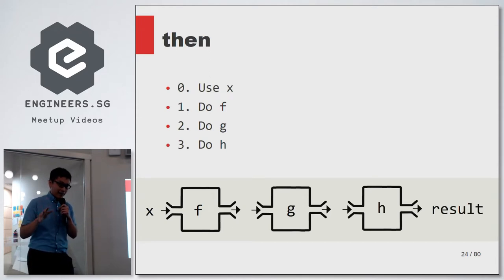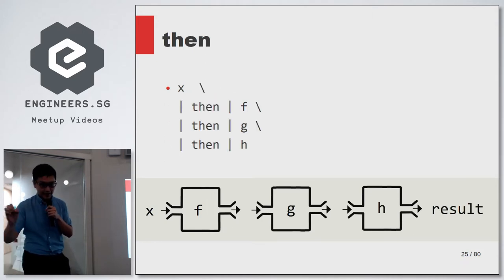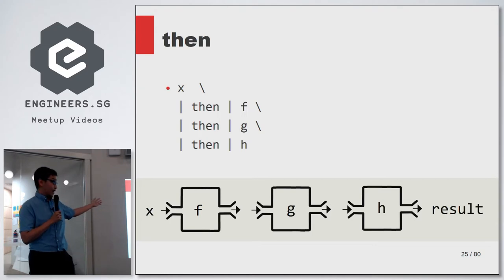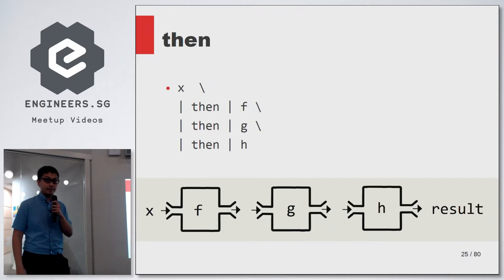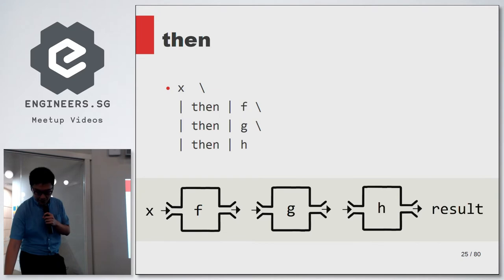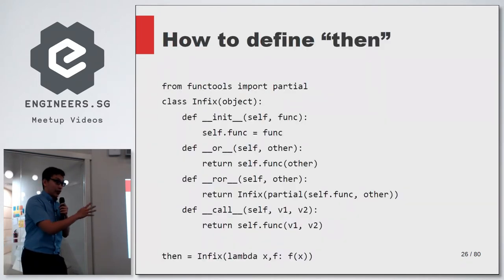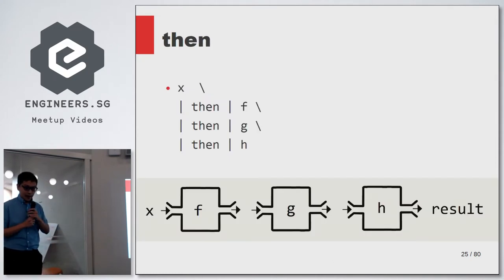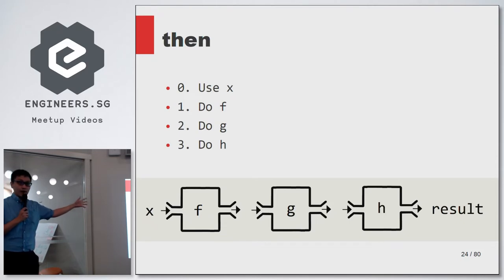Using some Python syntax hacking, this would be valid Python code — step one, you do f; step two, you do g; step three, you do h. The actual definition of the 'then' function looks a little complicated — you don't need to remember it. The key concept is that I can express my calculation using a step-by-step process, like step one, step two, step three.